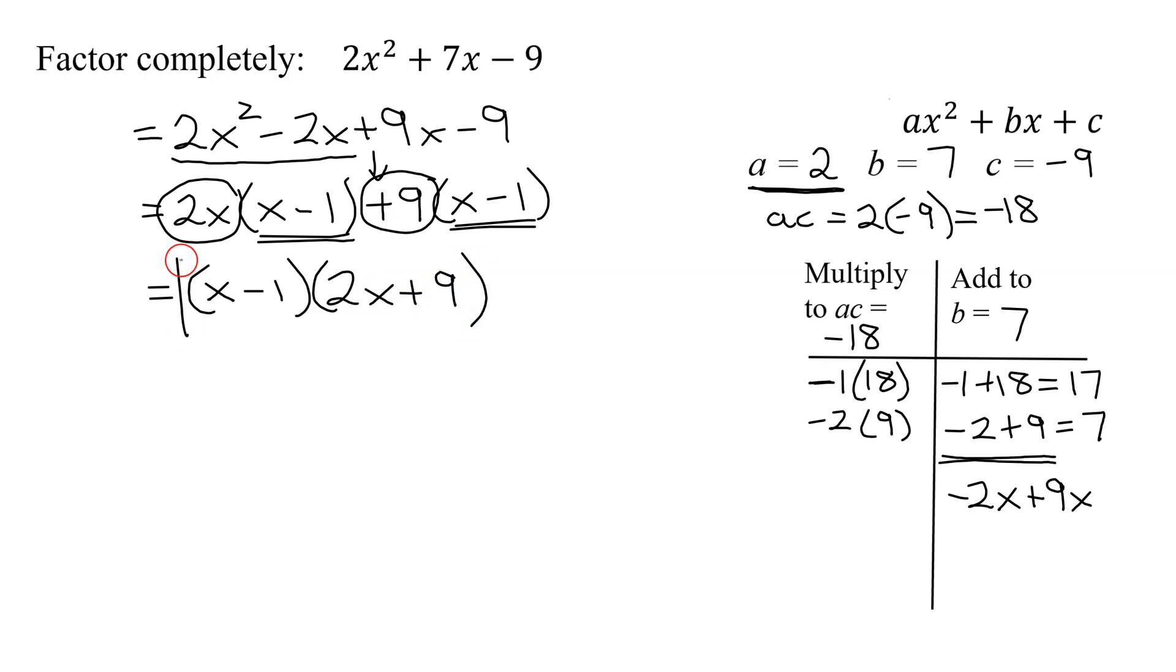So now I have factored my trinomial. And don't forget, how can you check every factoring problem? By multiplying it out. So since I have two binomials here, you'd FOIL this out to check you landed up where you started.